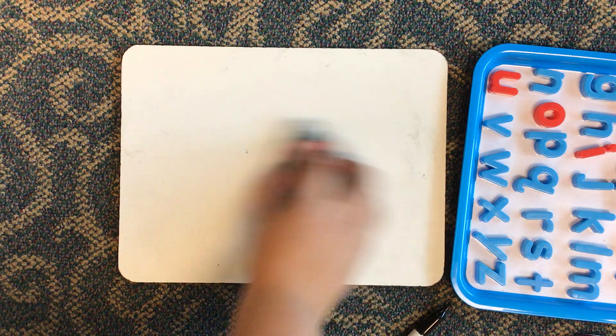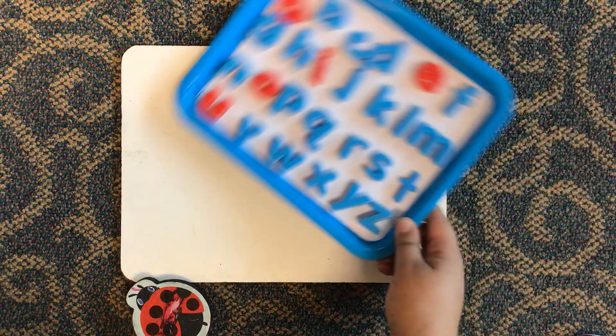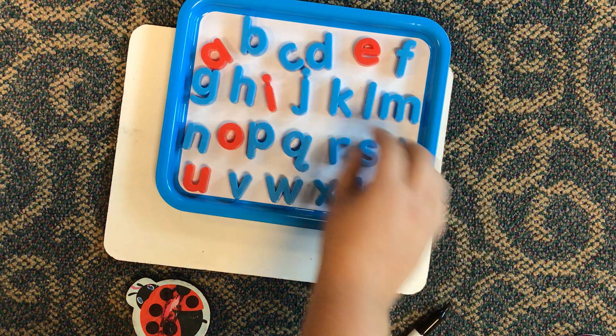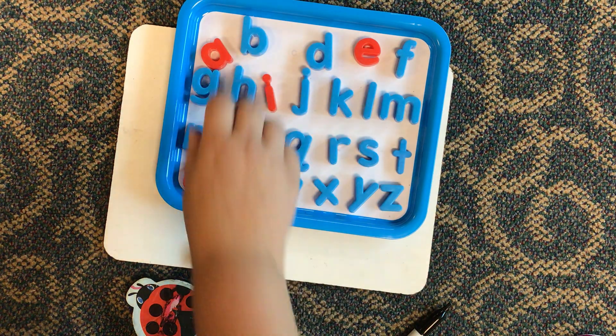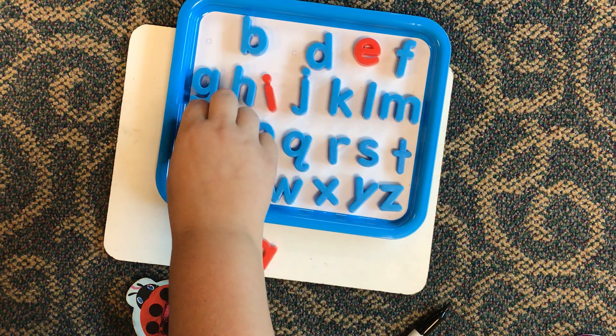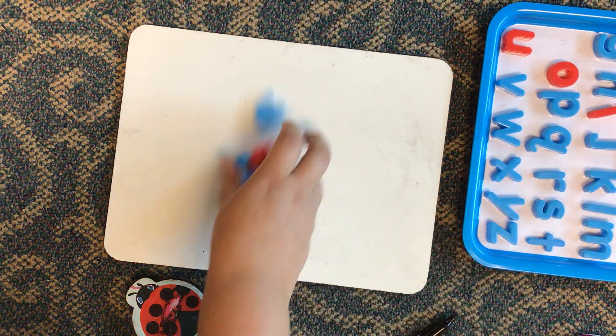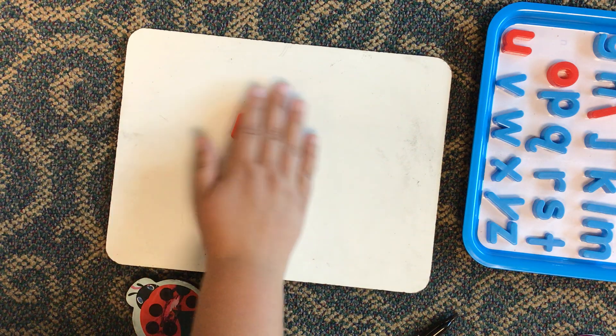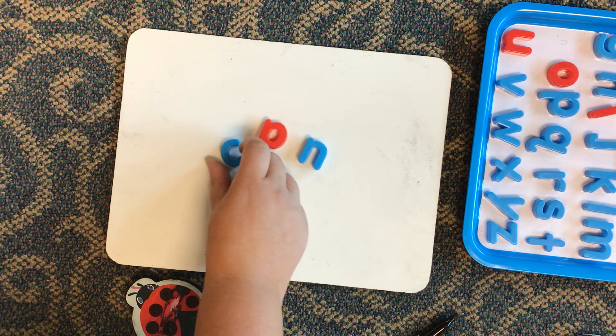Now, let's go to mix it and fix it. I've got my letters here. Let's pull off the letters for the word can. We need a C, an A, and an N. All right, friends. Let's mix it and fix it.